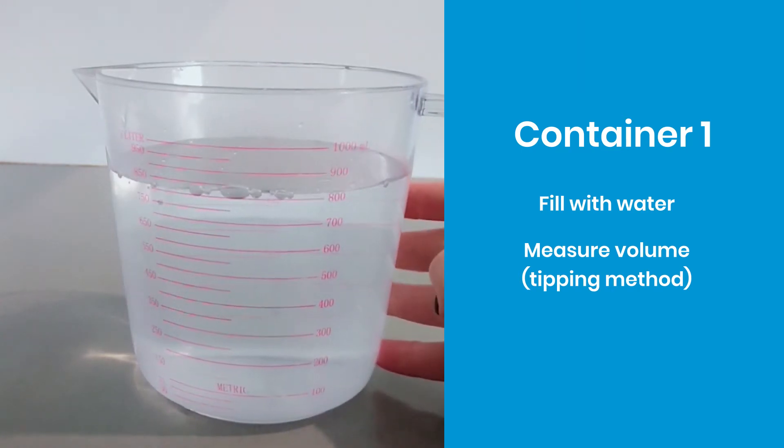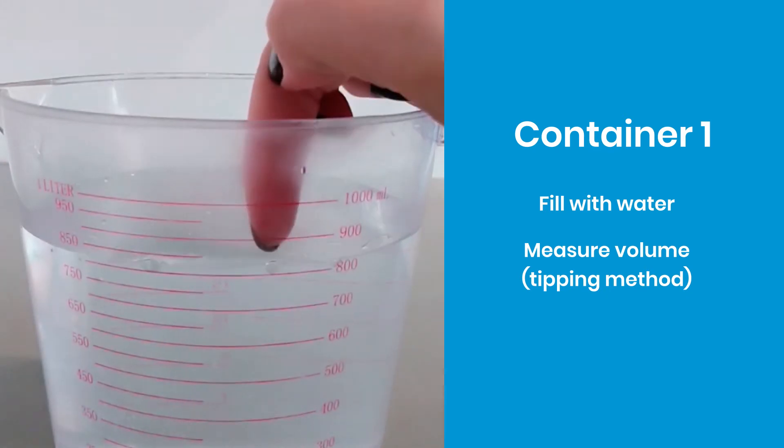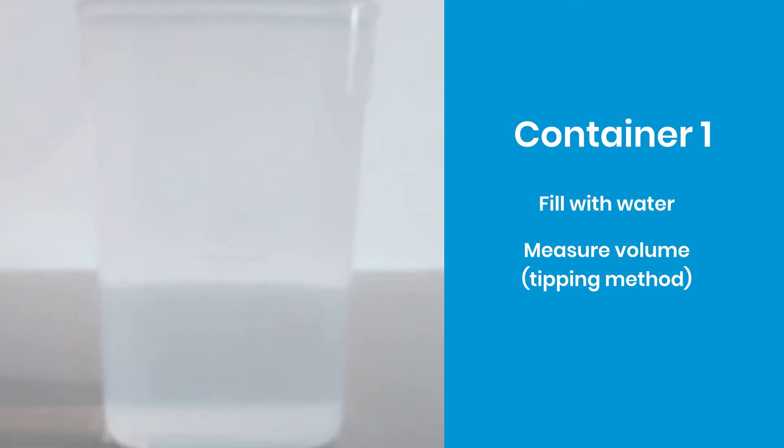So it's up to you, depending on what tools the students have available, how precise you want them to be. So you might say that 800 and a little bit is enough. Or you might decide that you need your students to use tablespoons or smaller measuring jugs or something like that and get a more precise answer. That's your call. And I'd probably be a bit flexible on that, depending on what the kids have access to at home.